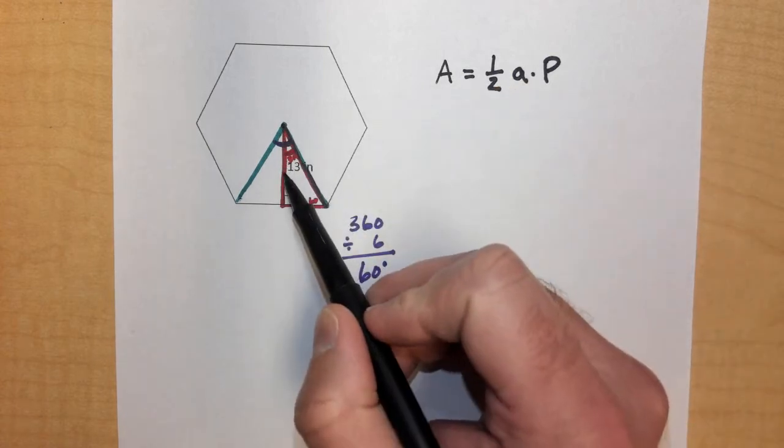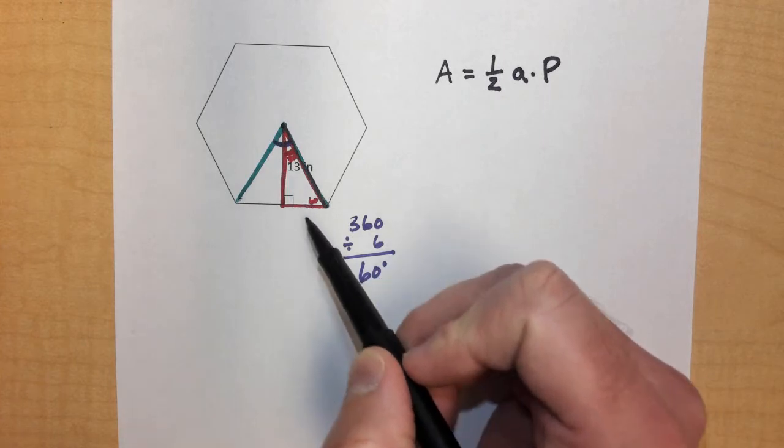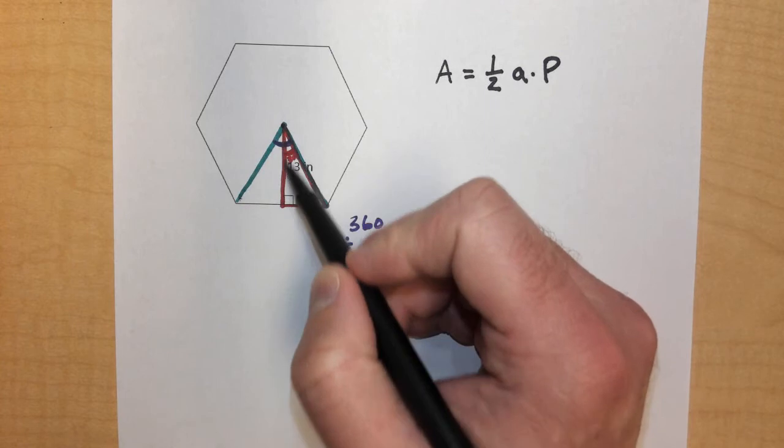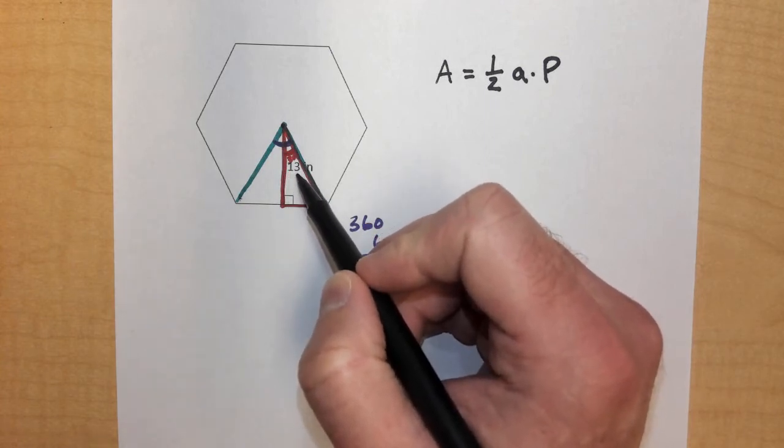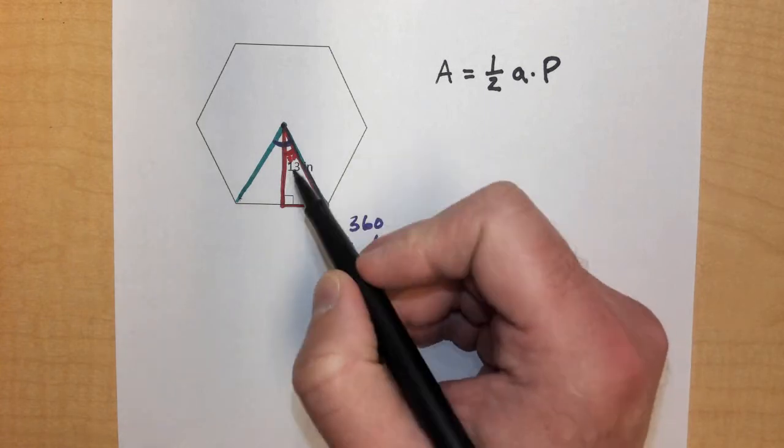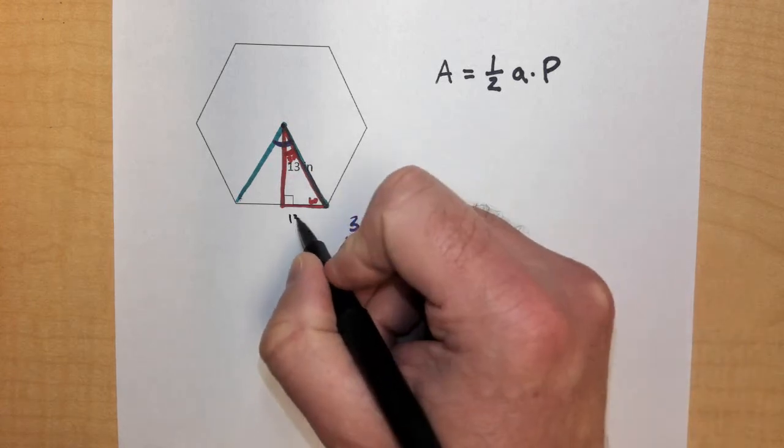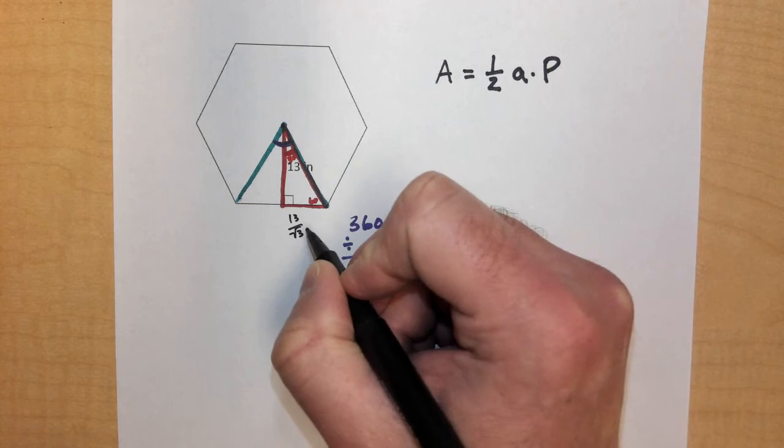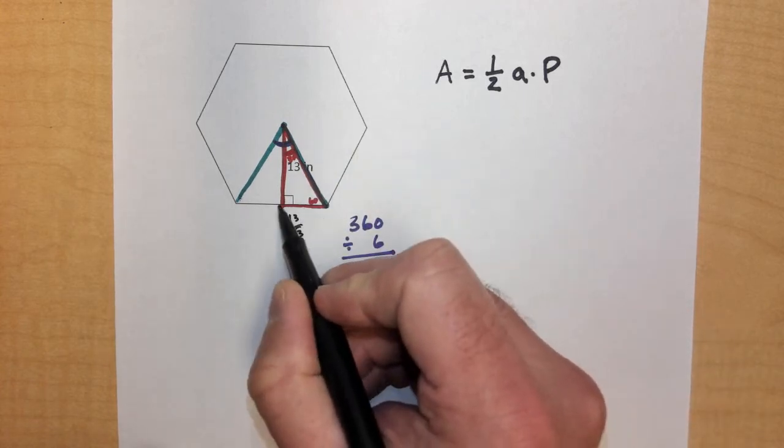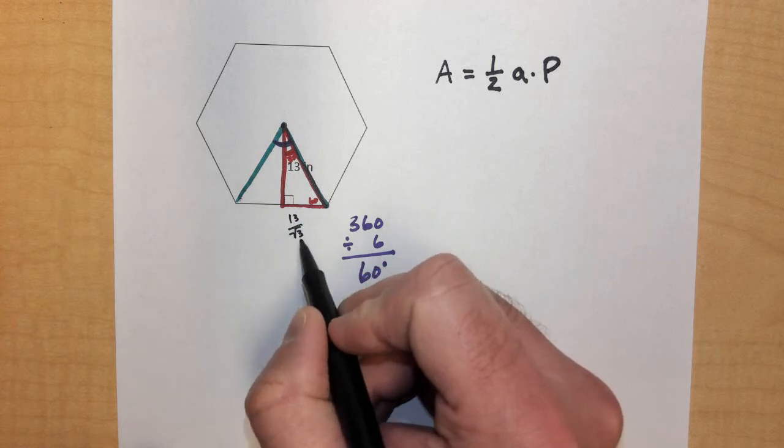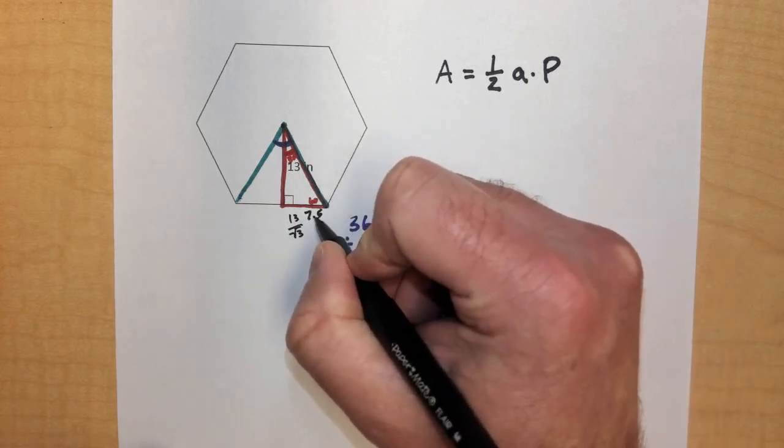Well, we have the longer leg here. So instead of multiplying by the square root of 3 to get to the apothem length, since we're given the apothem length of 13, if we just simply divide 13 by the square root of 3, we'll get the side length of this portion of the side of the hexagon, this portion of our triangle. And 13 divided by the square root of 3 is 7.5.